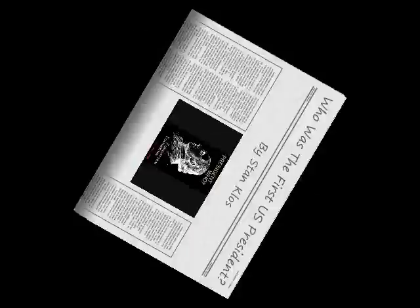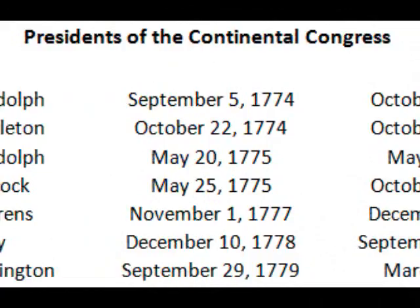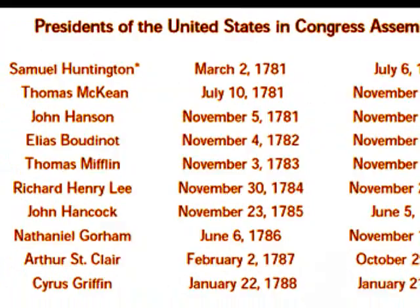The evolution of the U.S. Presidency occurred in four distinct stages: Presidents of the Continental Congress of the United Colonies, Presidents of the Continental Congress of the United States, Presidents of the United States and Congress Assembled, and Presidents of the United States under the current U.S. Constitution.